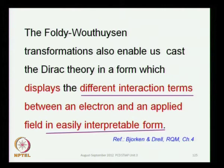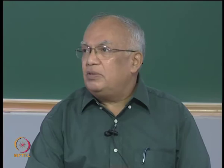If you read Bransden and Joachain's book Physics of Atoms and Molecules, you will see various terms referred to as relativistic terms - spin-orbit interaction and so on. But those terms are not directly manifest in the Dirac equation, and what the Foldy-Wouthuysen transformations help us achieve is to display them in a form that can be very easily interpreted.